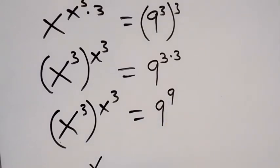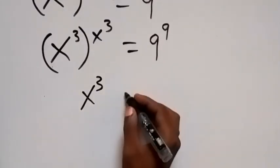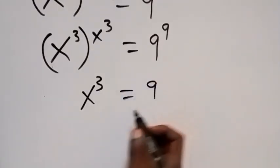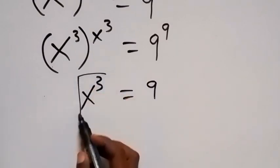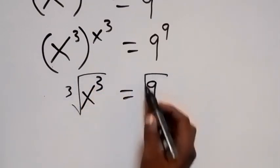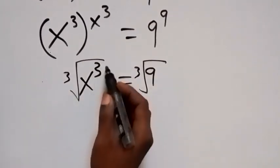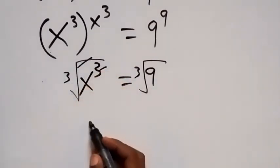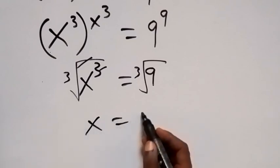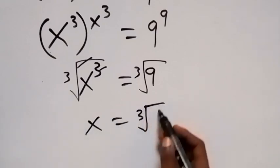Therefore, X raised to power 3 equals 9. To get X, we take the cube root on both sides. So X equals the cube root of 9.